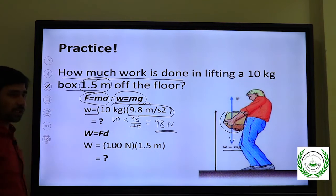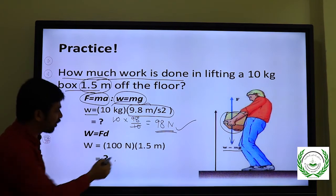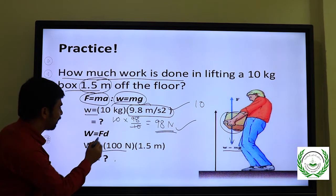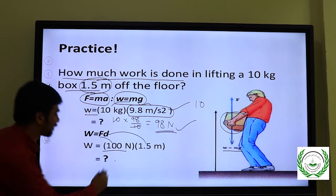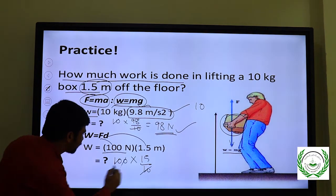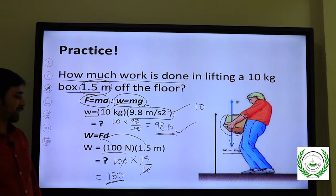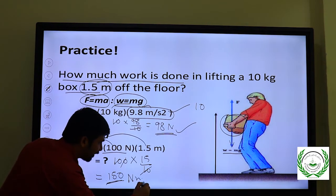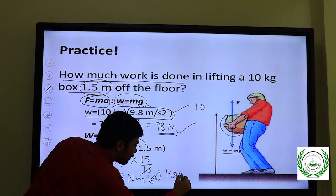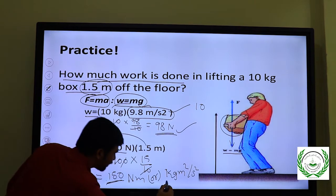Work equals force times displacement. We got 98 Newtons, or we can approximate as 100 Newtons using g = 10 m/s². So work equals 100 × 1.5 = 150 Newton-meters. Therefore the work done is 150 Joules, or equivalently 150 kg·m²/s².